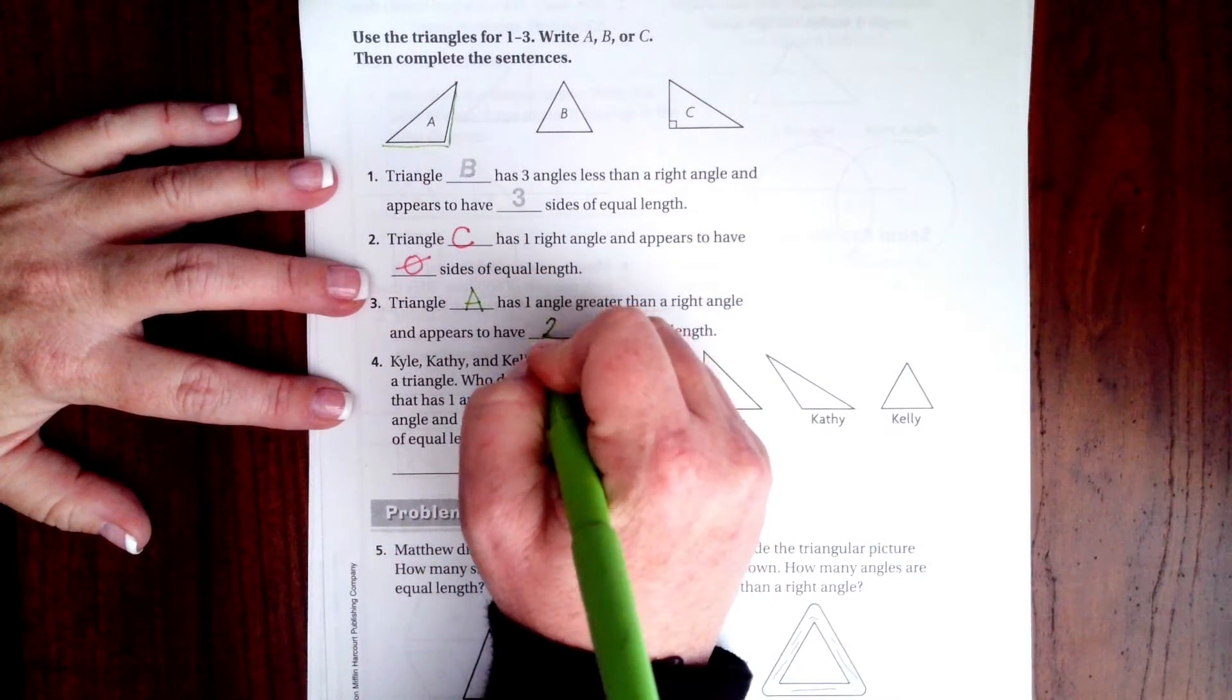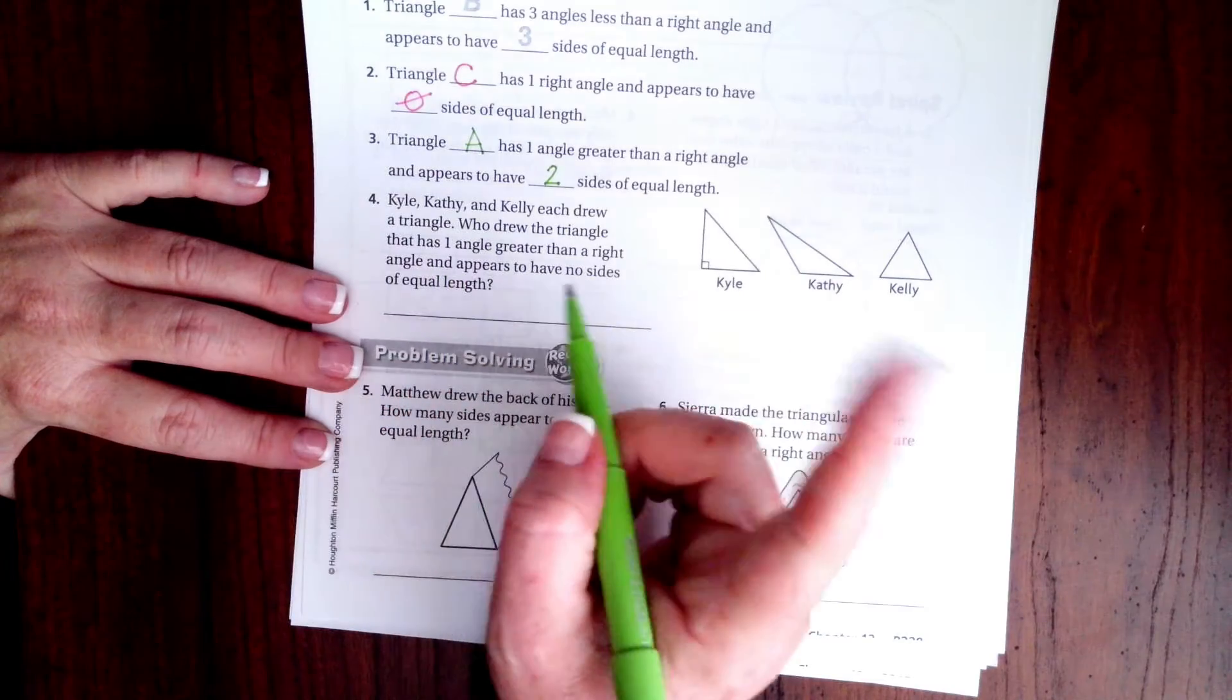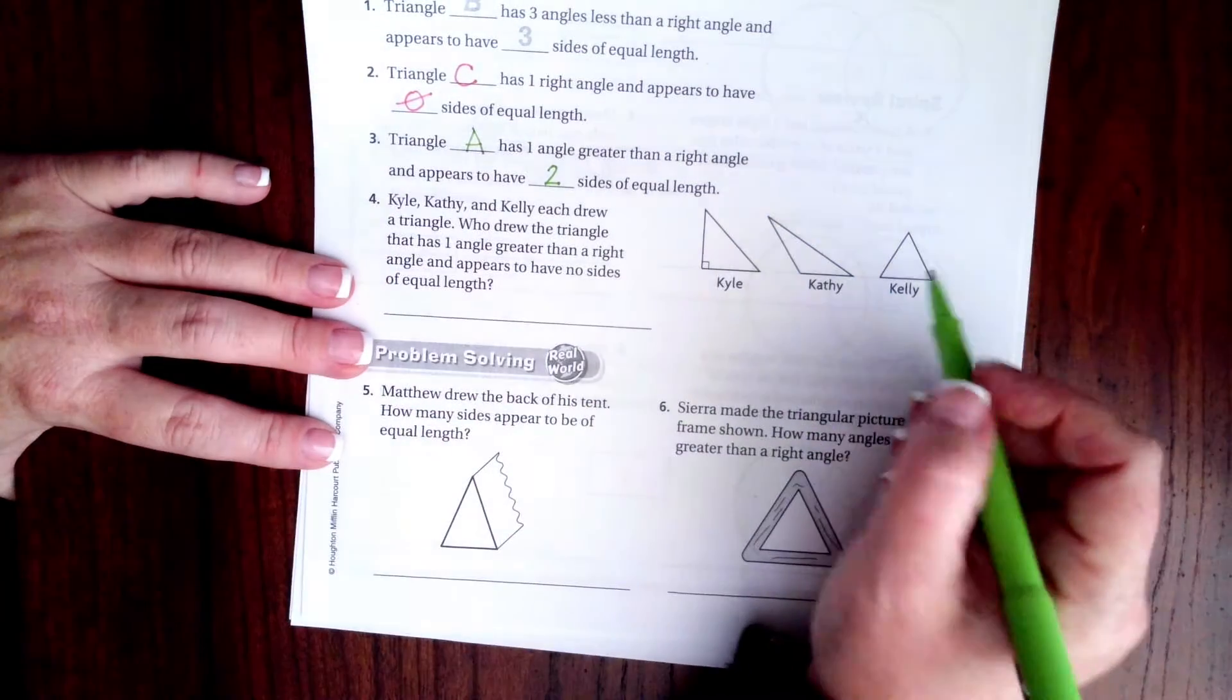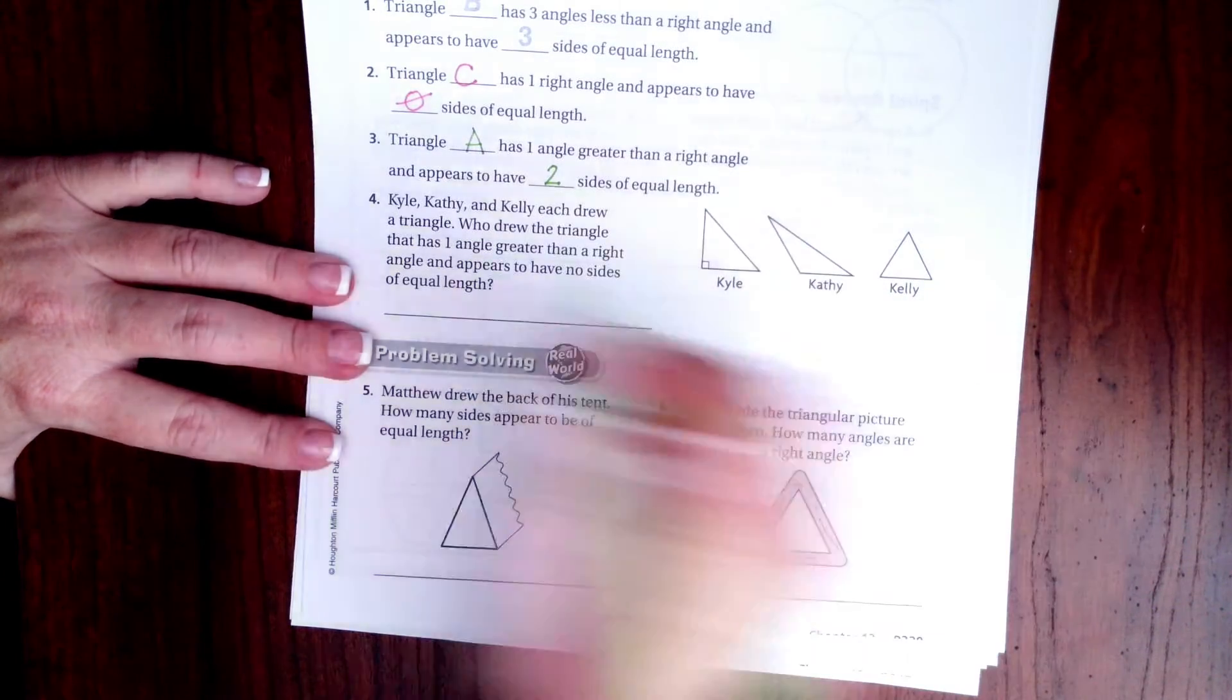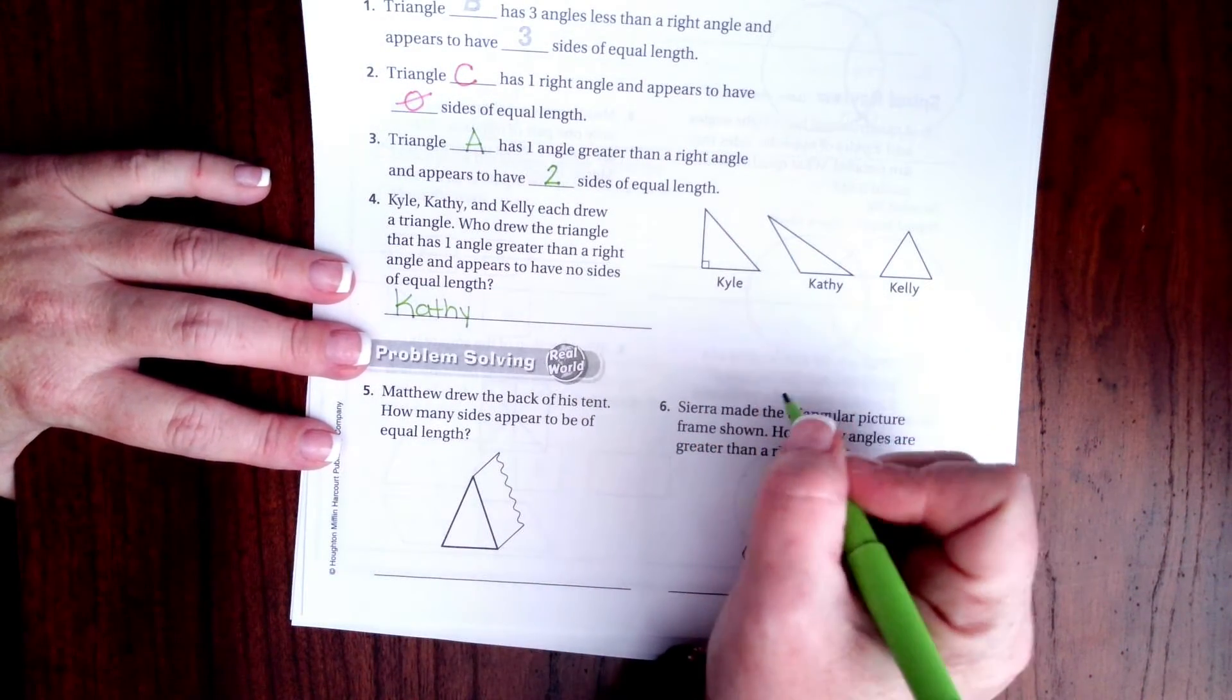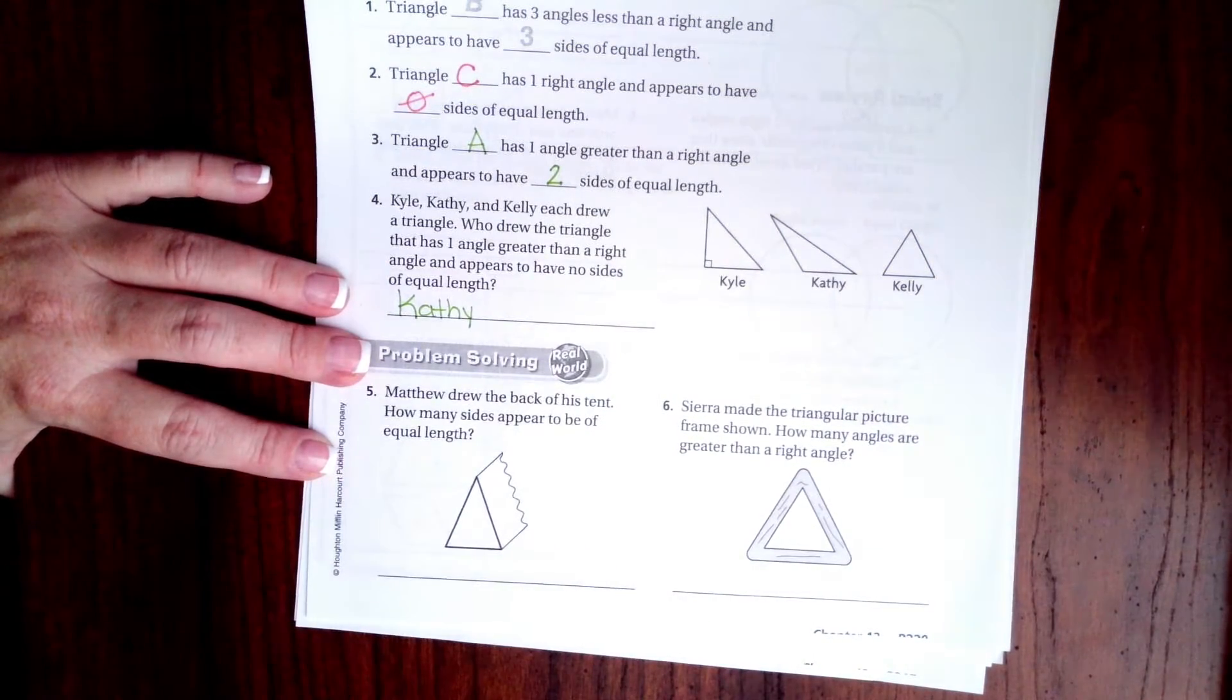Kyle, Caffey, and Kelly each drew a triangle. Who drew the triangle that has one angle greater than a right angle and appears to have no sides of equal length? That's not any angle greater than a right angle, this one has a right angle, so Caffey is the only one that drew one with an angle wider than a right angle and none of the sides match in size.